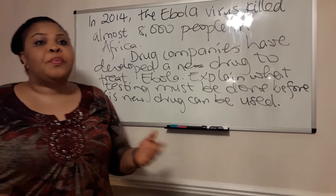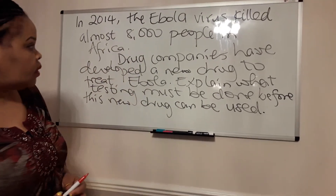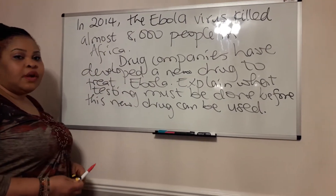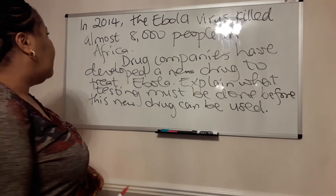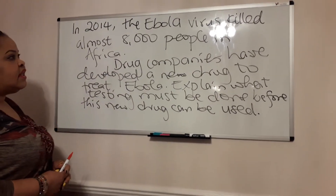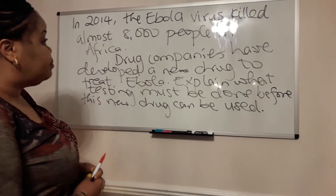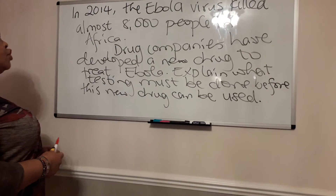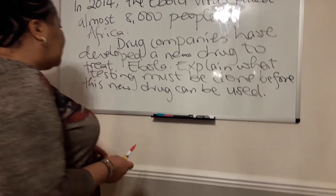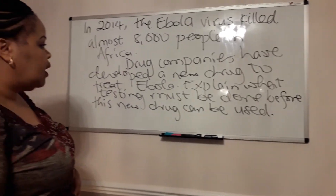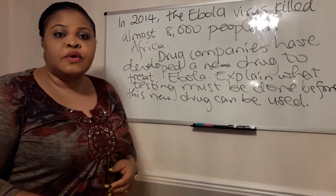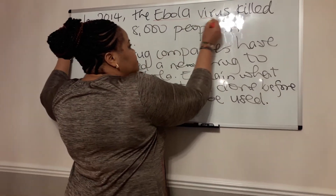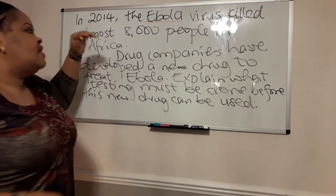Just to practice some of the things I did talk about in my last video, I'm going to read through this question really quickly. It's on viruses. 'In 2014, the Ebola virus killed almost eight thousand people in Africa. Drug companies have developed a new drug to treat Ebola. Explain what testing must be done before this new drug can be used.' I've read it the first time and I'm going to read it again.